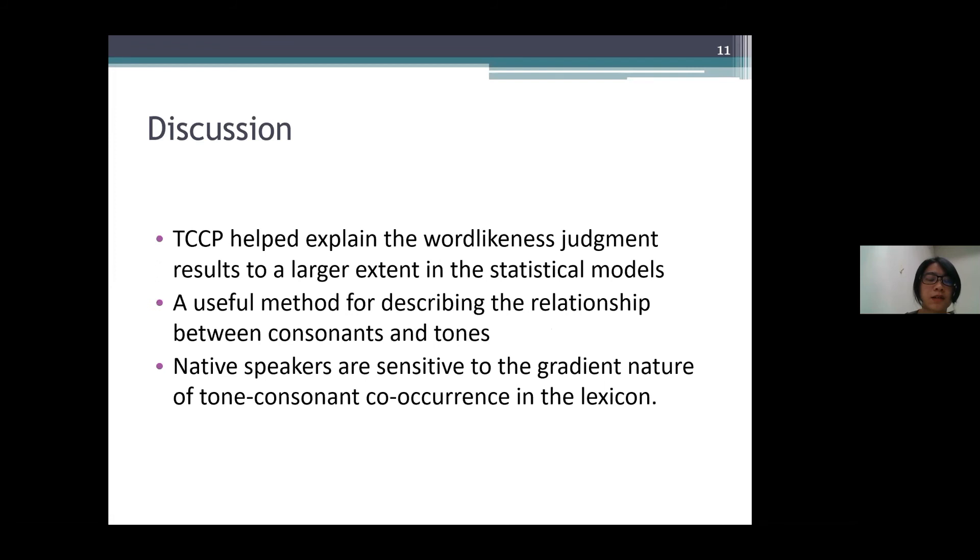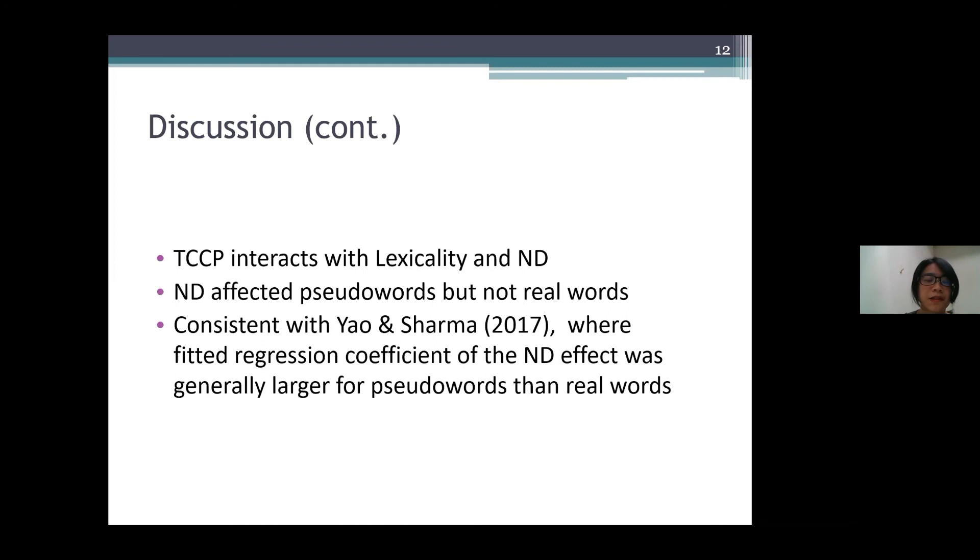And I will move on to the discussion. So TCCP helped explain the word-likeness judgment results to a large extent in the statistical models. Thus, it can be considered a useful metric for describing the relationship between consonants and tones. We found a significant effect of TCCP on word-likeness. This indicates that native speakers are sensitive to the gradient nature of tone-consonant co-occurrence in the lexicon.